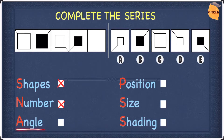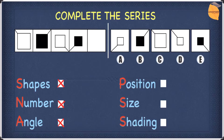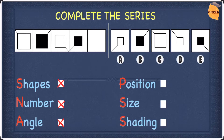In terms of angle, there is no rotation — this square hasn't been rotated to become the next square, and this line hasn't been rotated to become the next line, so angle doesn't work either. In terms of position, if you look at the line, it changes position every time: from the top left it moves to the top right, then to the bottom right, then to the bottom left. If it continues, it should move to the top left. So we cross off all options where the line is not at the top left — eliminating A, B, and E — leaving us with C and D.